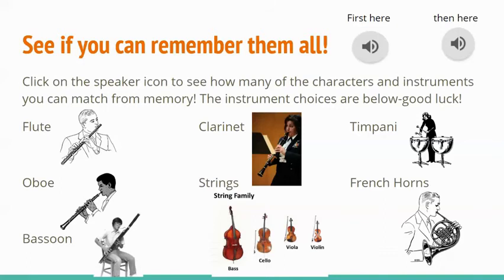Now who is this lumbering old bassoon? The grandfather. You really know this piece — that's all of them. Except wait, I left out the most important one of all — the strings. And that is Peter himself. I congratulate you on a perfect quiz. And now the story begins.